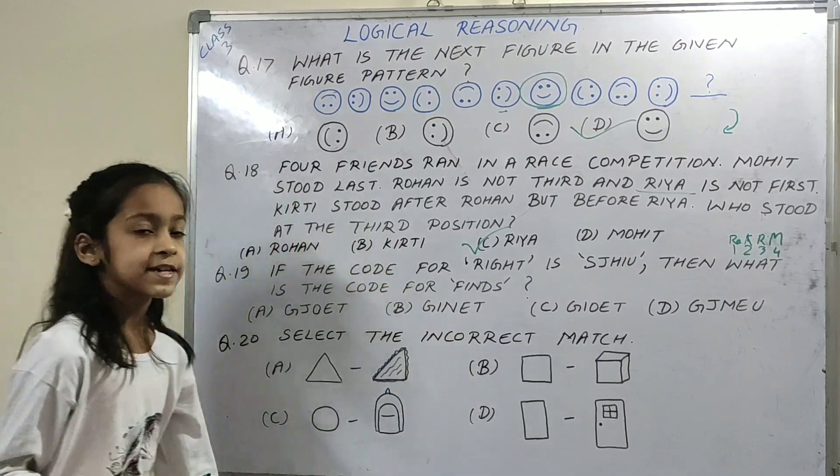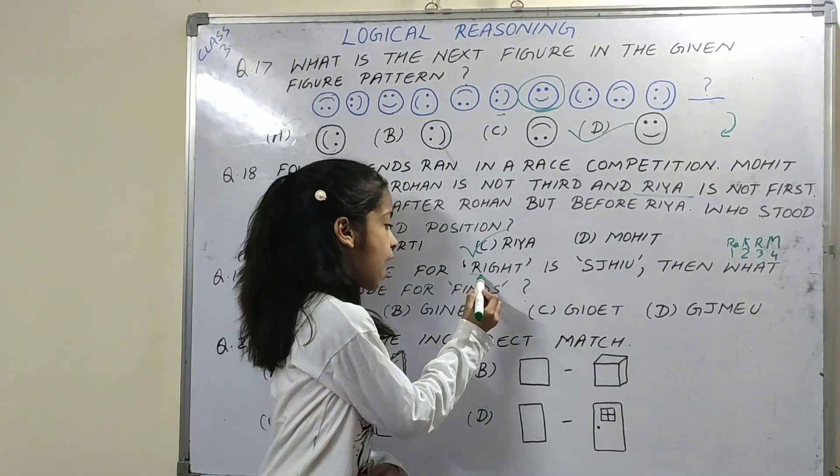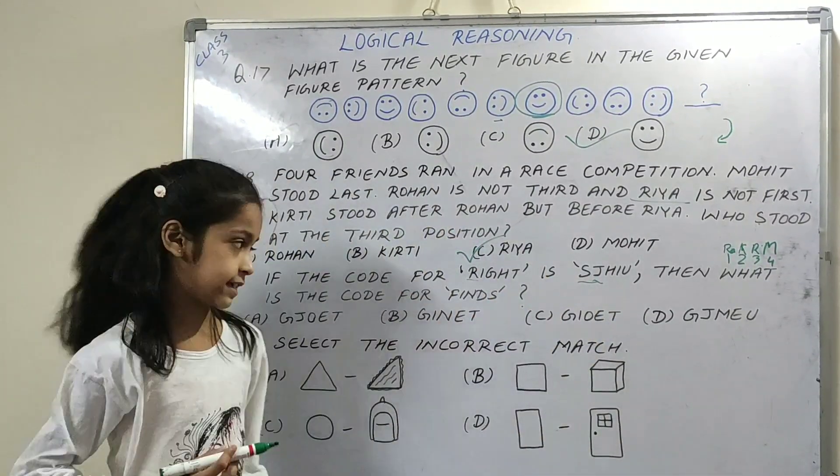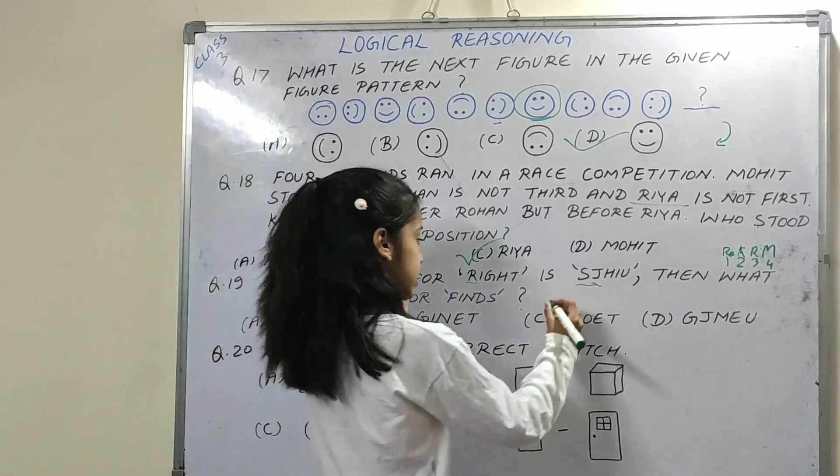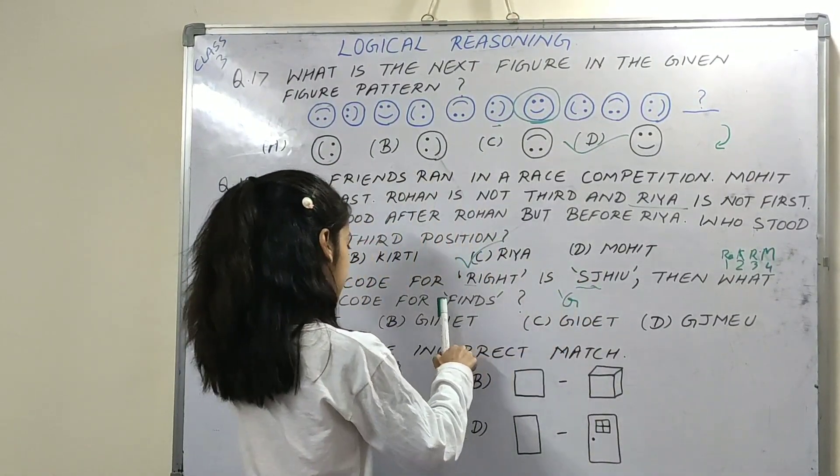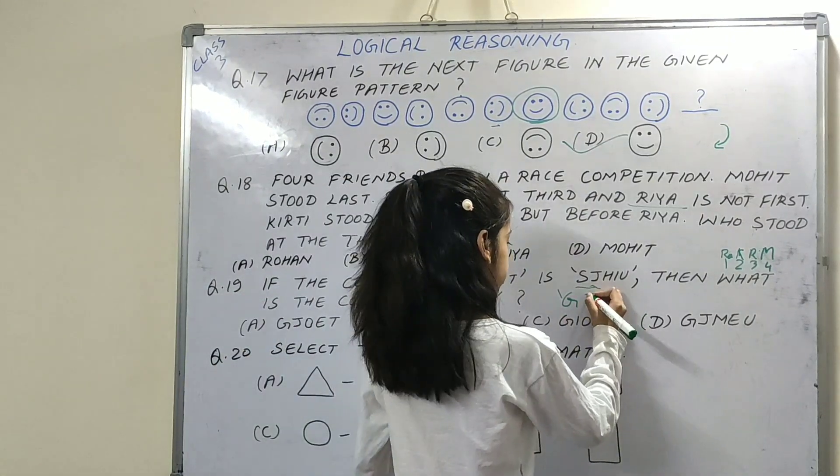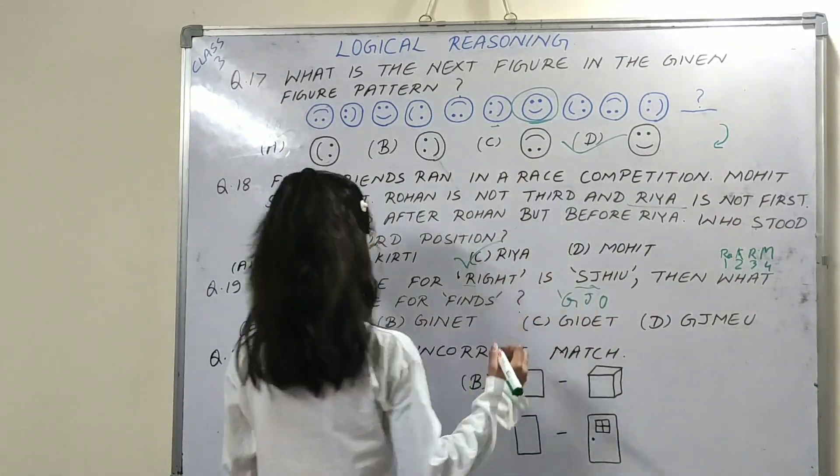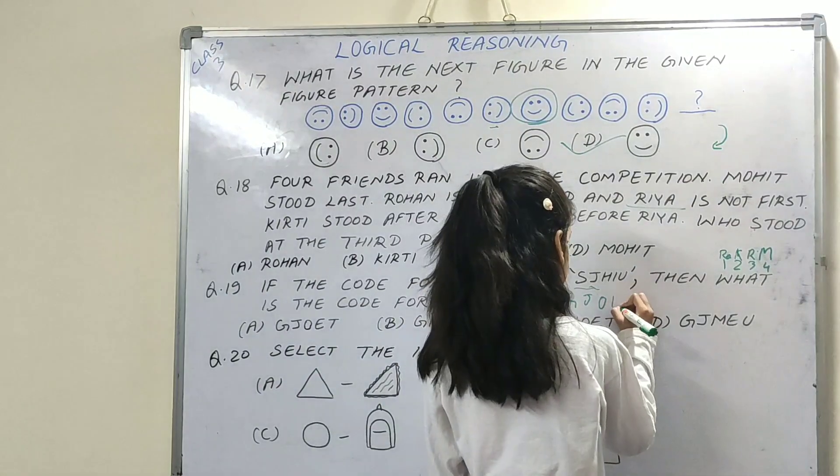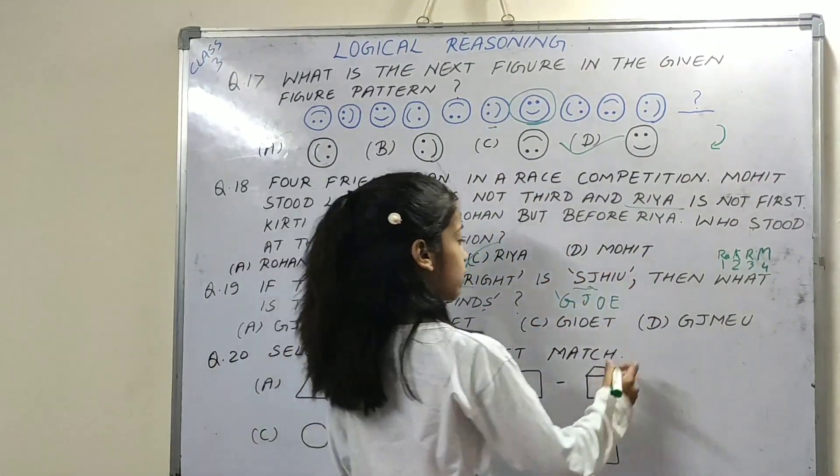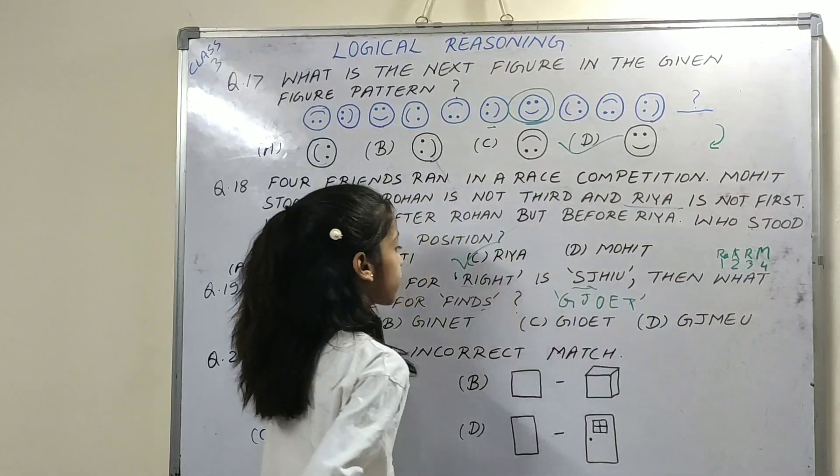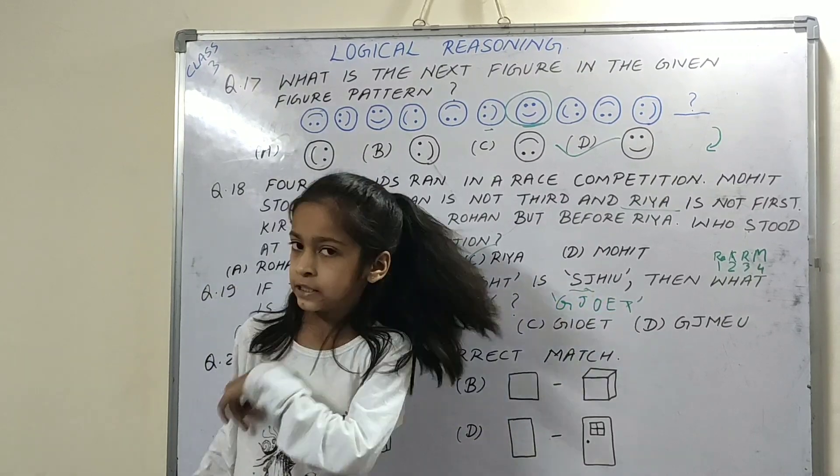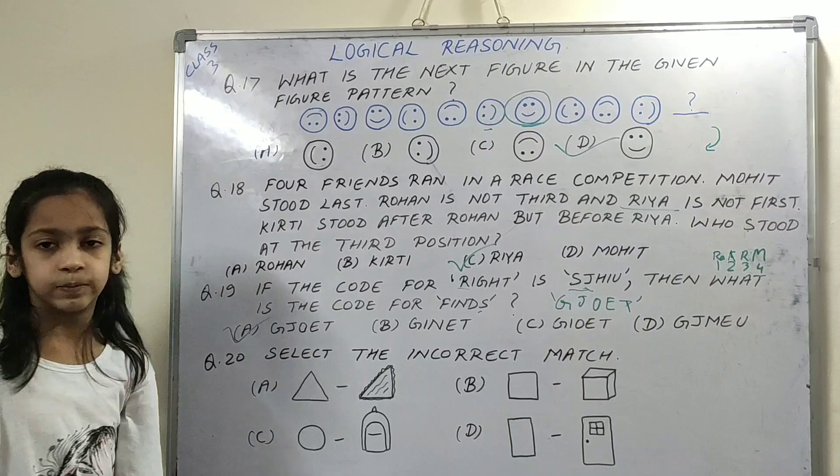Next question. If IJHT is written as SJHIU then what is the code for FINDS? If I is I, then it becomes J. F is F, then it becomes G. N is N, then it becomes O. D is D, then it becomes E. S is S, then it becomes T. So this is the code of FINDS: GJOET. Option A is the right option.